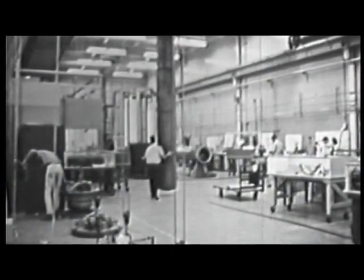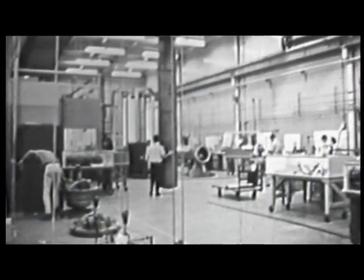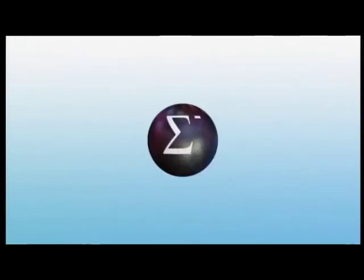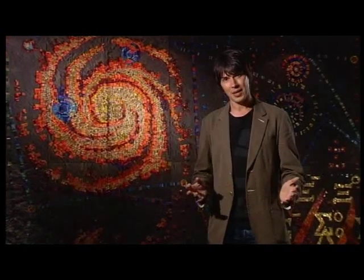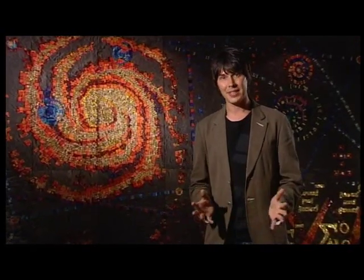Particle accelerators built in the 1940s and 50s led to the discovery of many new particles, given exotic names like pions, sigmas, lambdas, and deltas. By the mid-1960s, over 80 apparently fundamental particles had been discovered — so many, in fact, that particle physicists began to refer to them as a zoo. This was no better than Mendeleev's periodic table.